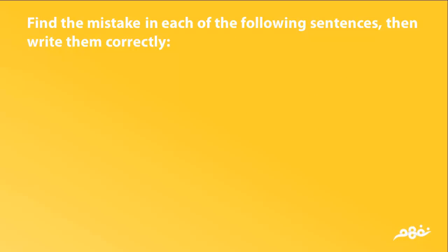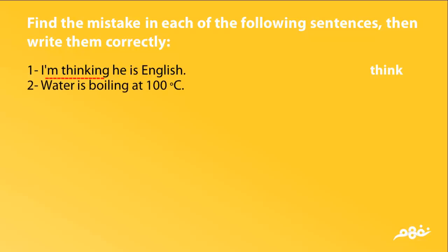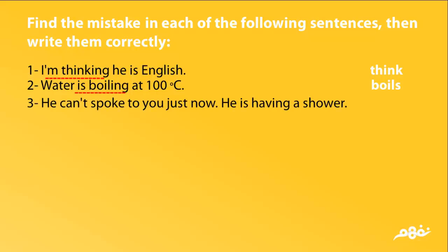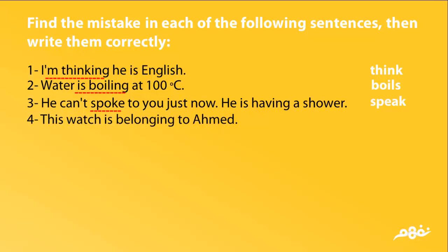Find the mistake in each sentence, then write it correctly. One: 'I'm thinking he is English.' Correction: 'I think he is English.' Two: 'Water is boiling at 100 degrees Celsius.' Correction: 'Water boils at 100 degrees Celsius.' Three: 'He can't speak to you now.' — no change noted. Four: 'This watch is belonging to Ahmed.' Correction: 'This watch belongs to Ahmed.'